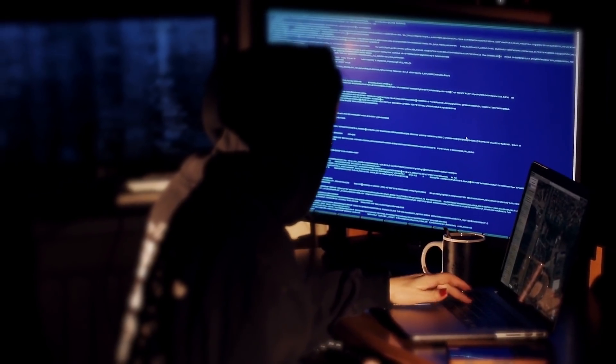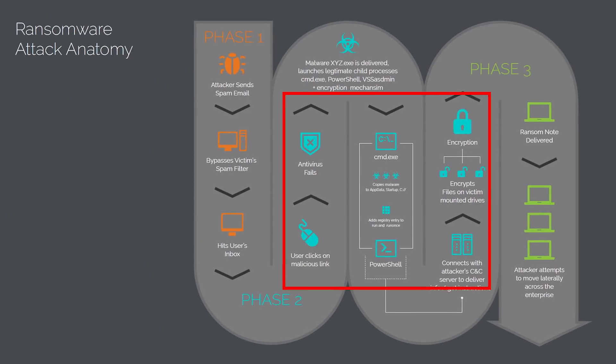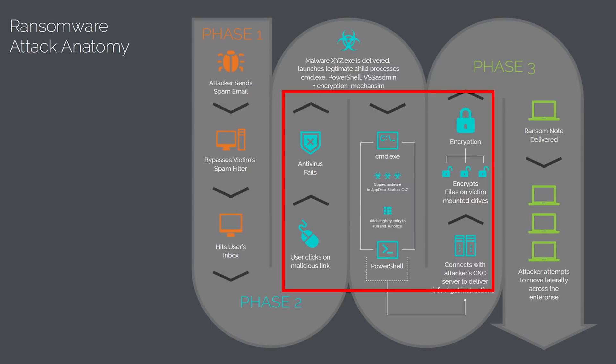Once downloaded, installing and opening the file allows the attacker to access your PC. This is the main component — the ransomware contacts a server, and that server will encrypt your PC with a special key.